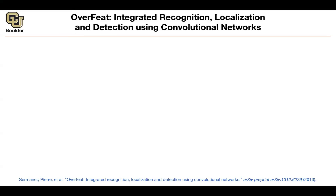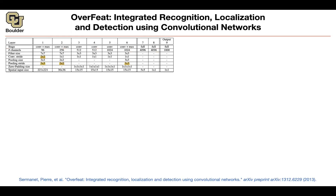We're going to start with OverFeat. This is one of the first papers — it's actually from 2013, right after AlexNet — that tries to address the problem of object detection. They use a unified framework to do recognition, basically classification, localization, and detection. Let's start with the classification task. The network is very similar to AlexNet, practically speaking.